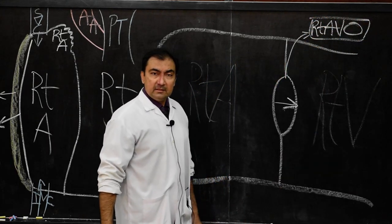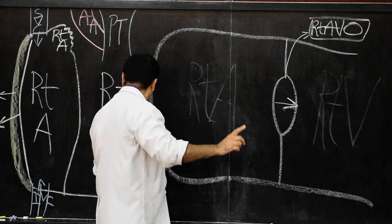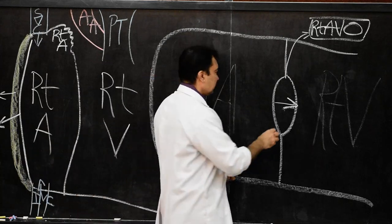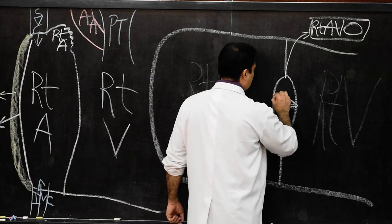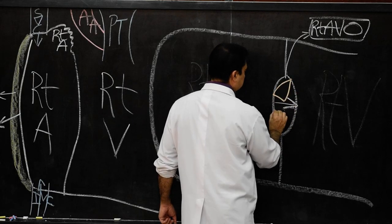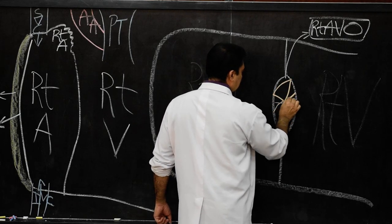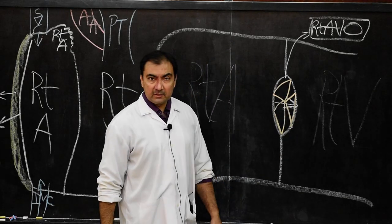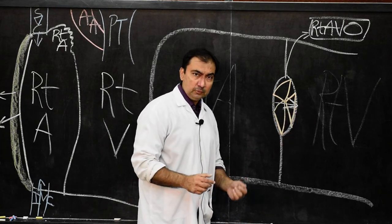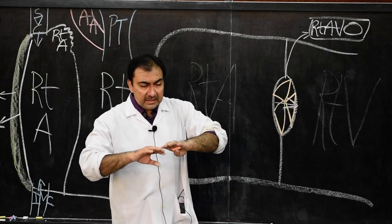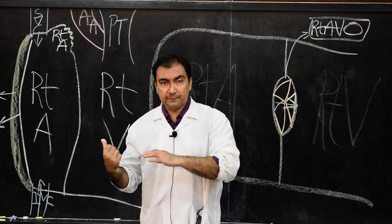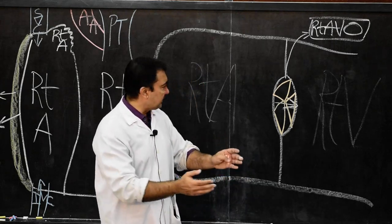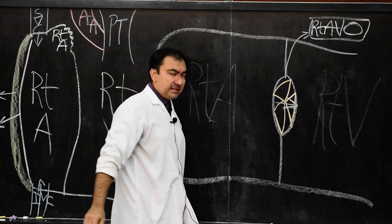The right atrioventricular opening shows inside the three cusps — the tricuspid valve. We can show the presence of the three cusps in the right atrioventricular opening between right atrium and right ventricle. Now, for the interior of the right atrium, after discussing the external features, the entire right atrium is opened.